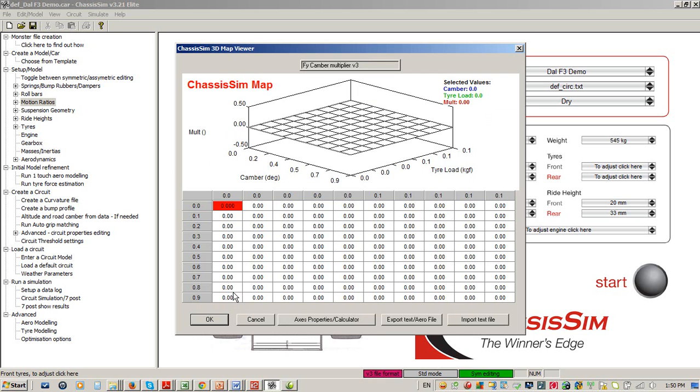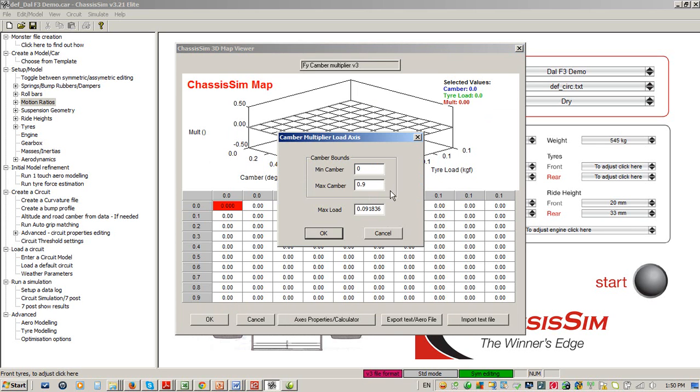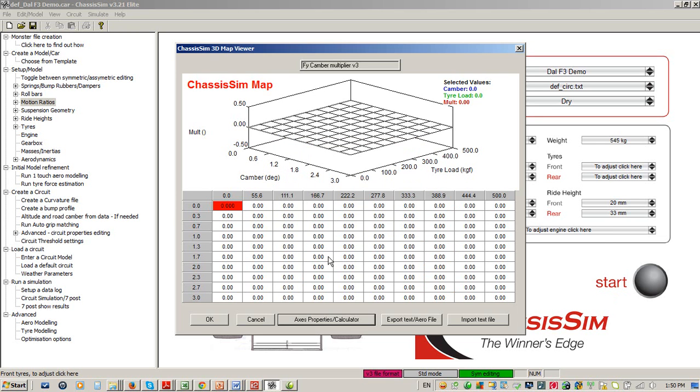So what you can do here, if we go to Access Property Calculator, we can basically set up a max load, say maybe at 500 kilos, and I'll set max camber, say at three degrees, and I'll click on OK. And what I can do is I can tune this as a function of load. So you get a really fine control.